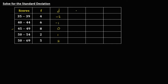For the next column, that's D squared — the square of each D value. The square of negative 2 is 4, the square of negative 1 is 1, the square of 0 is 0, the square of 1 is 1, and the square of 2 is 4.